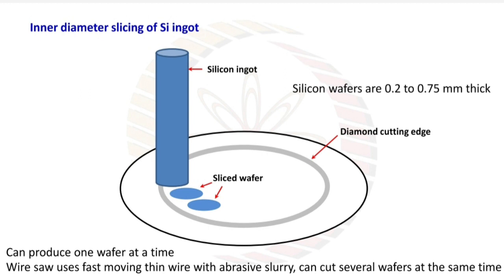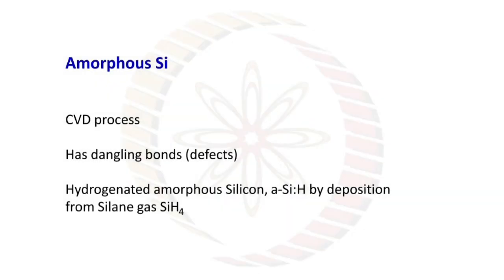How to make amorphous silicon by CVD process. We can construct the amorphous silicon. It has dangling bonds, that is, it has defects. Hydrogenated amorphous silicon by deposition from silane gas, SiH4.